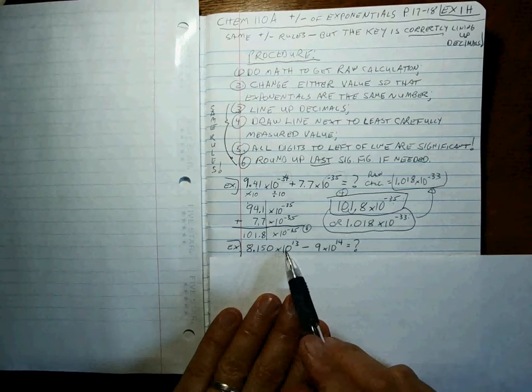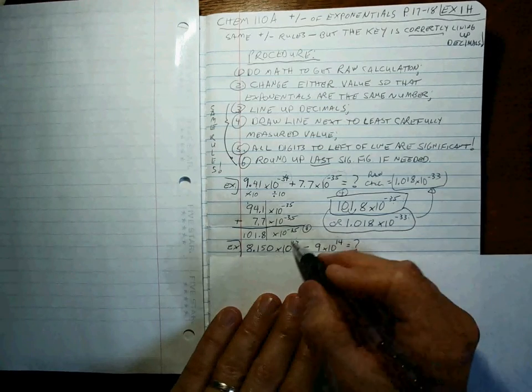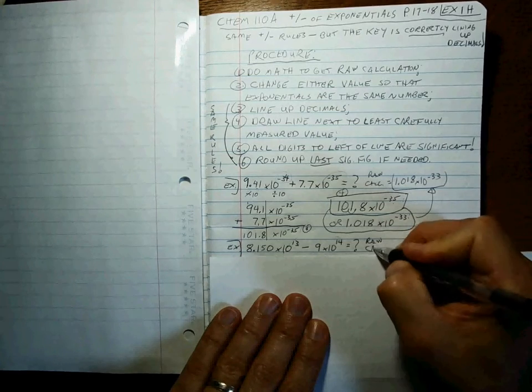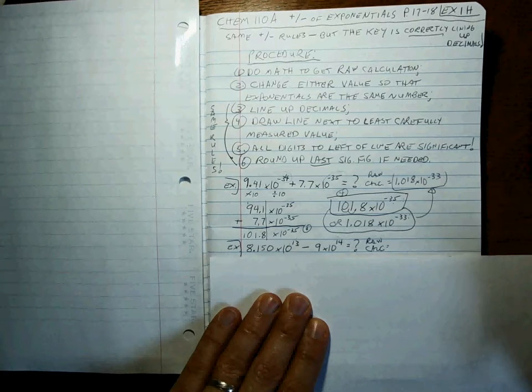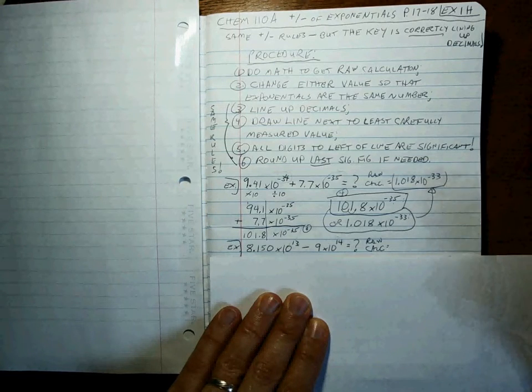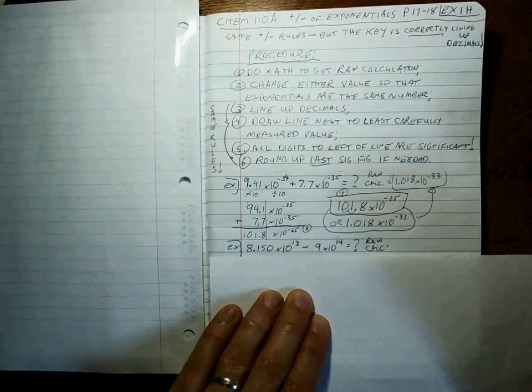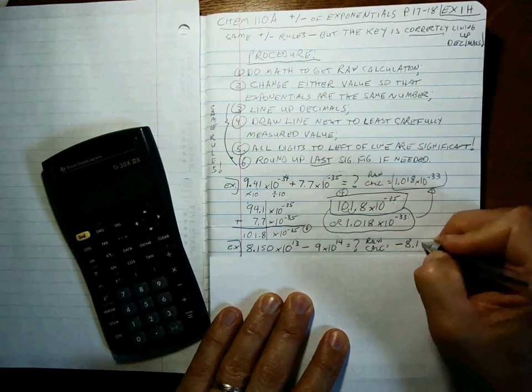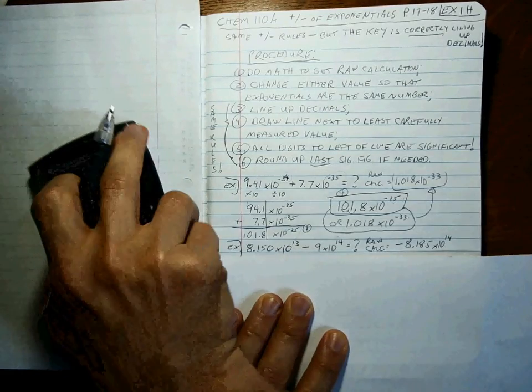Best to do some practice problems. Let's do another one: 8.150 times 10 to the thirteenth minus 9 times 10 to the fourteenth. Well, we have to match up the exponentials first after getting the raw calculator value. And what did we get? Well, let's do that one: 8.150 times 10 to the thirteenth minus 9 times 10 to the fourteenth. That's equal to minus 8.185 times 10 to the fourteenth.